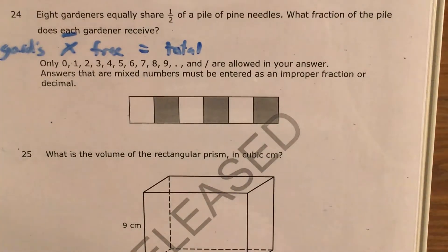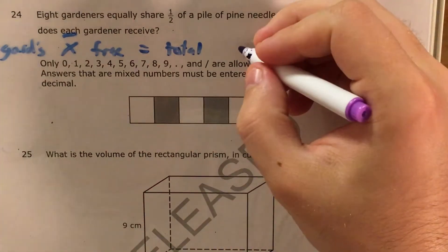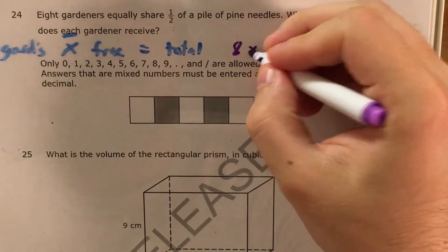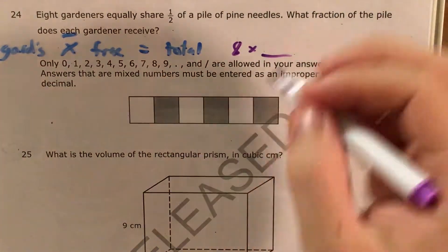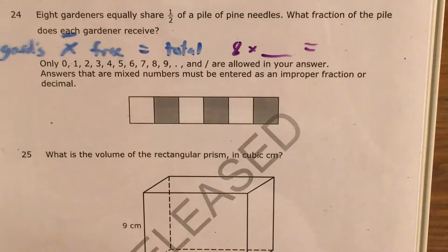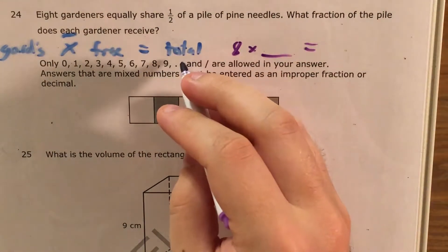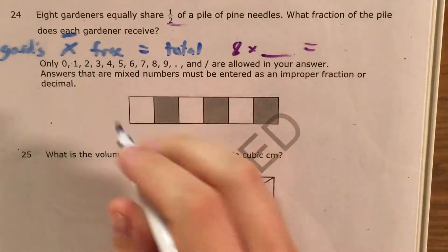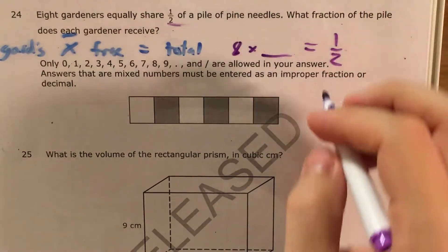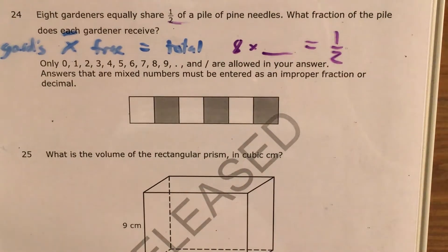Now I want to plug in the information I know. I know there are 8 gardeners, but I don't know what fraction of the pile they'll get—that's what I'm finding. The total amount they're sharing is half of a pile. Since it's asking what fraction each gardener receives, I'll plug in one half for my total, and I expect to get a fraction as my answer.